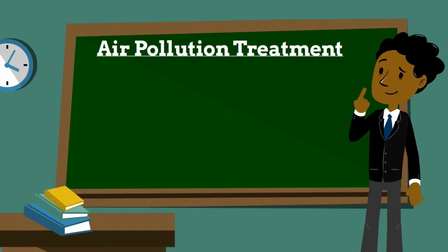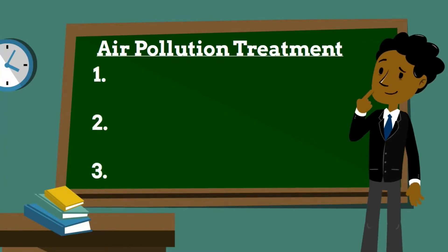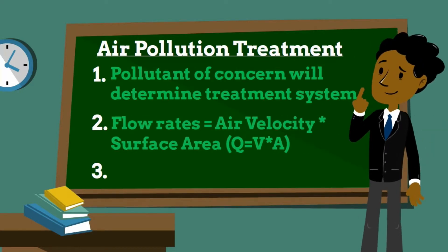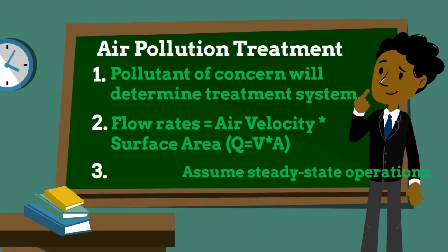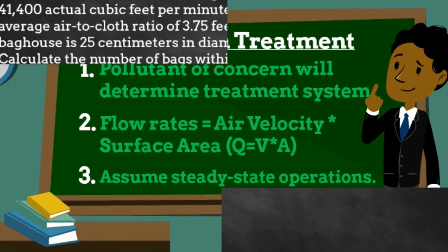When it comes to air pollution treatment devices, there are three things you need to keep in mind. Number one, the pollutant of concern will determine your treatment system. Bag filters are mostly used for particulate matter control. Secondly, the flow rate is equal to the air velocity times the surface area of your treatment media — for this example, your bag house. And lastly, always assume steady state operations.